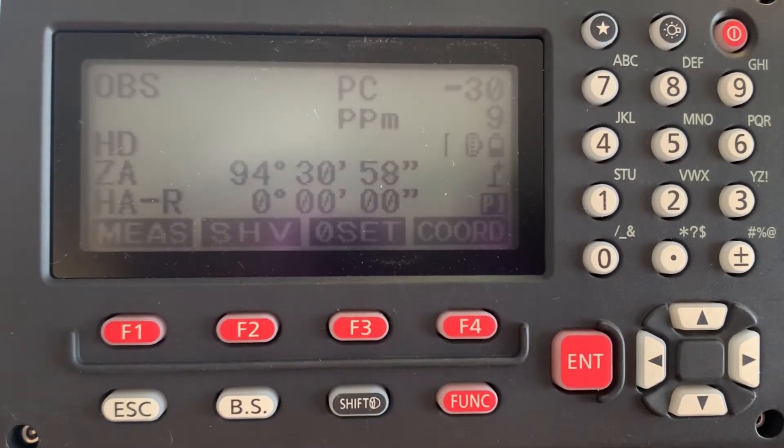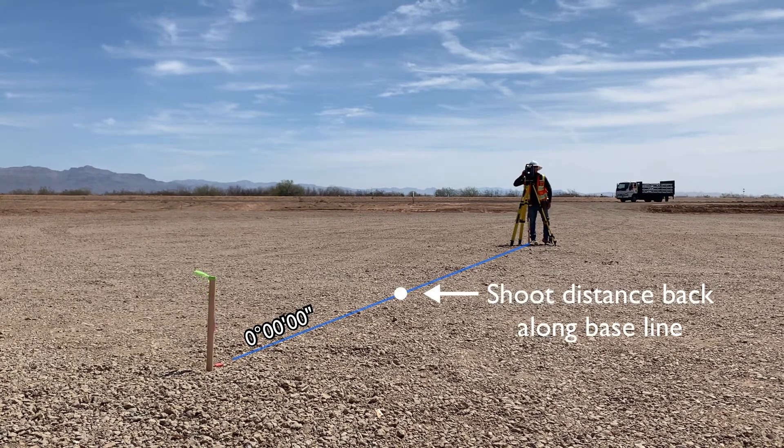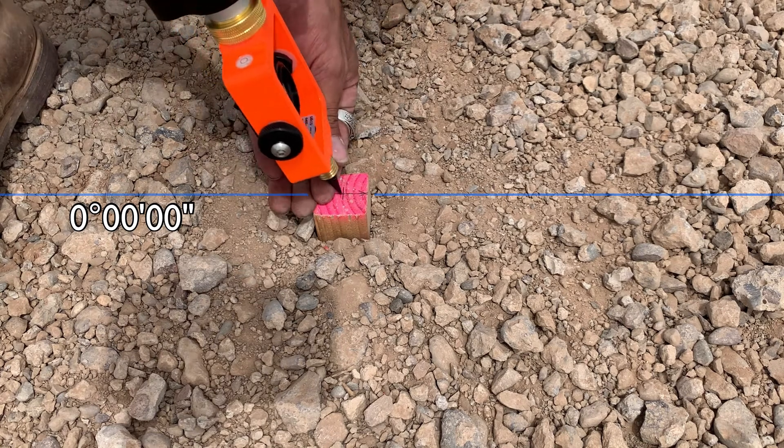Adjusting the vertical axis only, hard sights first to approximate, then fine motion. We should be looking exactly at the angular reference marked from the other end of our baseline.